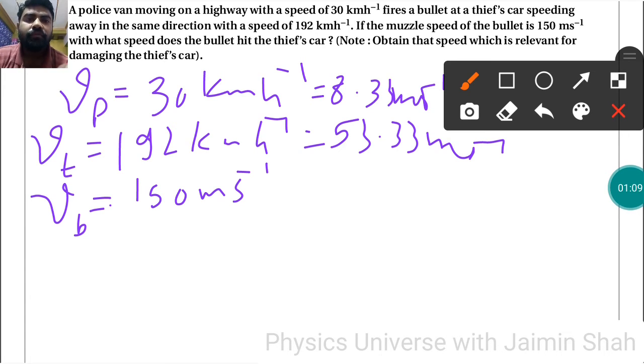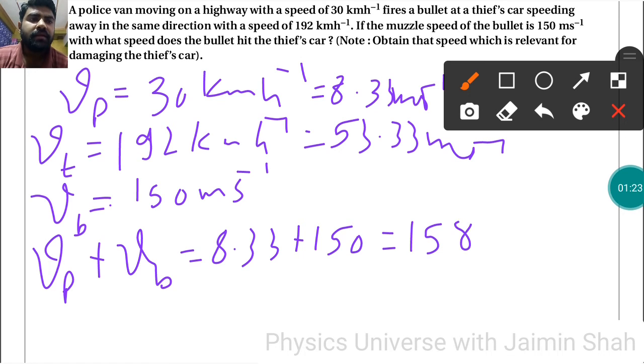So VT plus VB: 8.33 plus 150. That gives us 158.33.